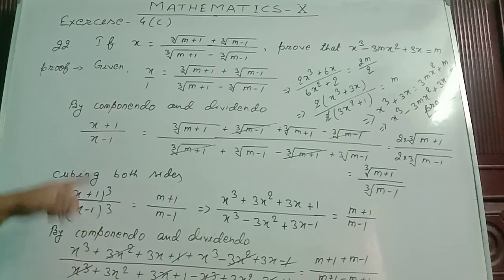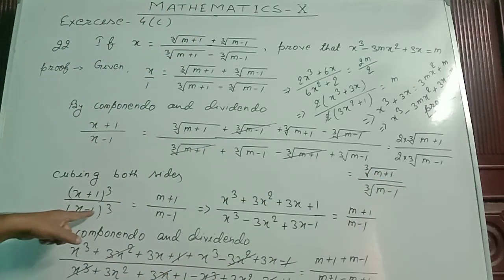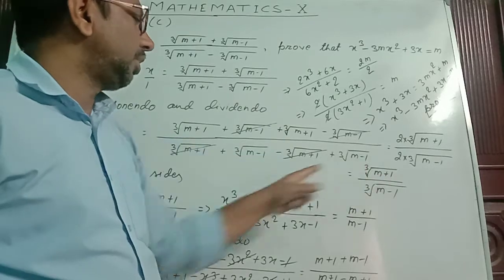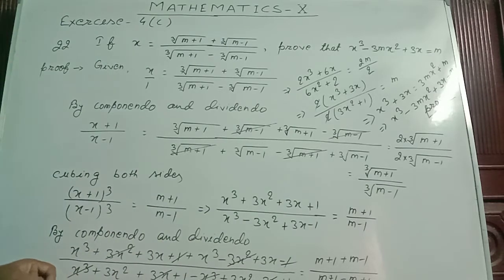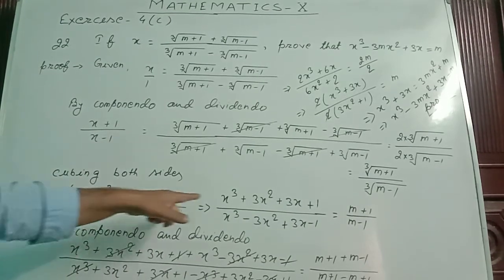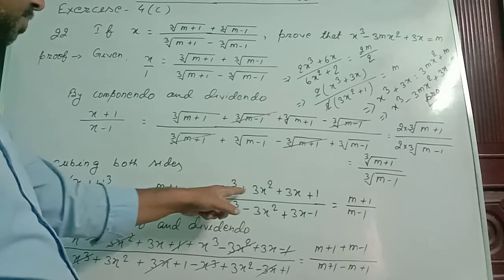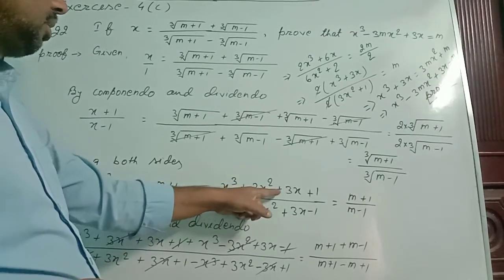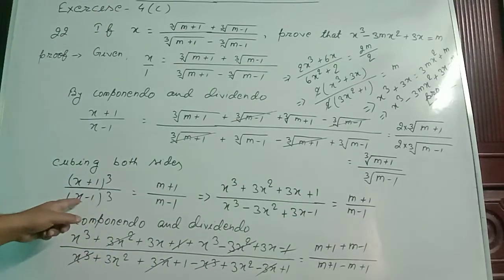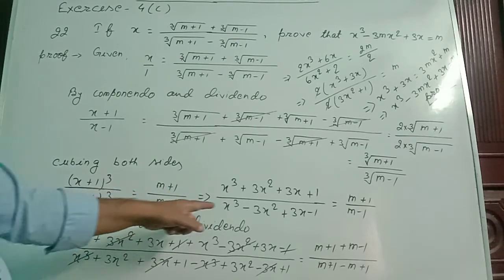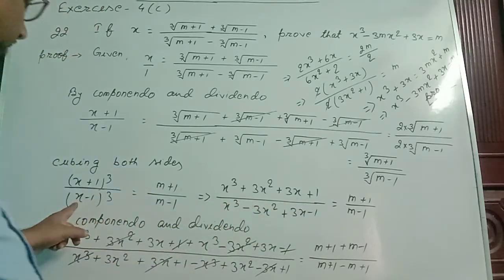Now, cubing both sides: x plus 1 whole cube by x minus 1 whole cube equals m plus 1 by m minus 1. Using the formula a plus b whole cube equals a cube plus 3a square b plus 3ab square plus b cube: for the numerator, x cube plus 3x square into 1 plus 3x into 1 plus 1. Similarly, a minus b whole cube equals a cube minus 3a square b plus 3ab square minus b cube, so the denominator gives x cube minus 3x square plus 3x minus 1.